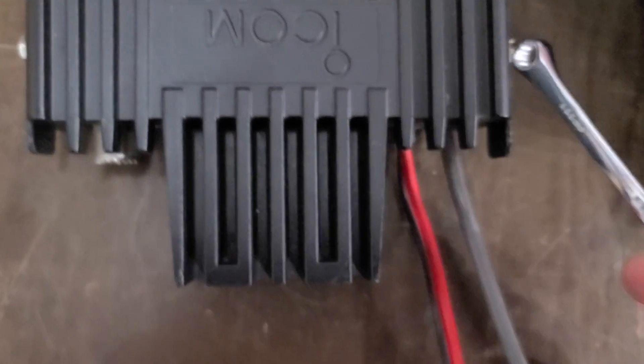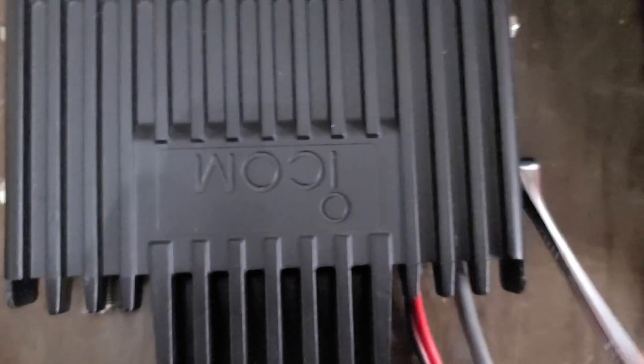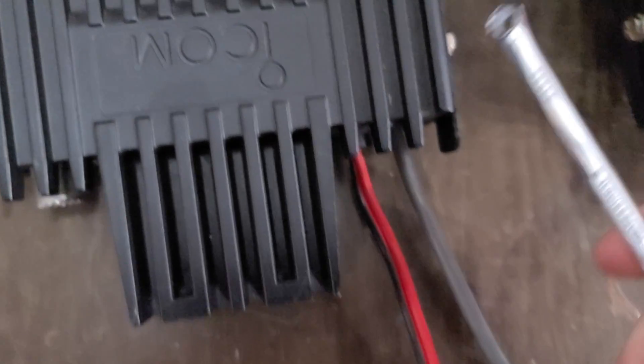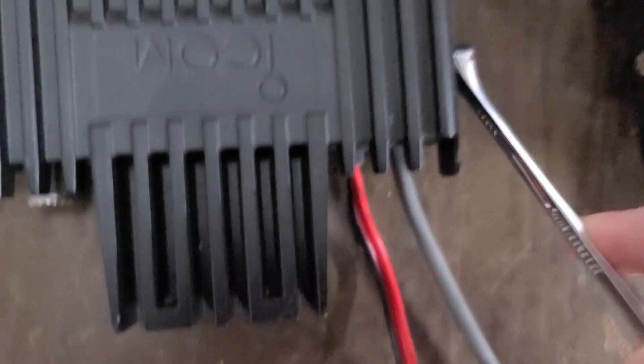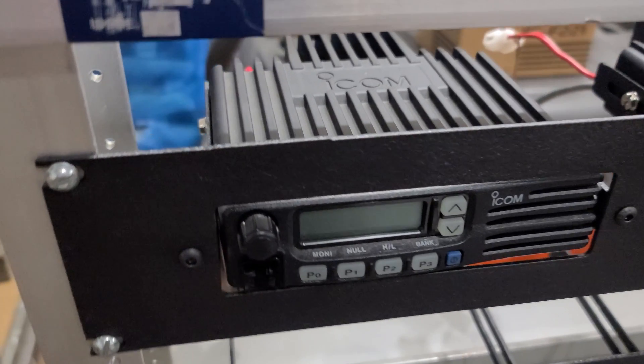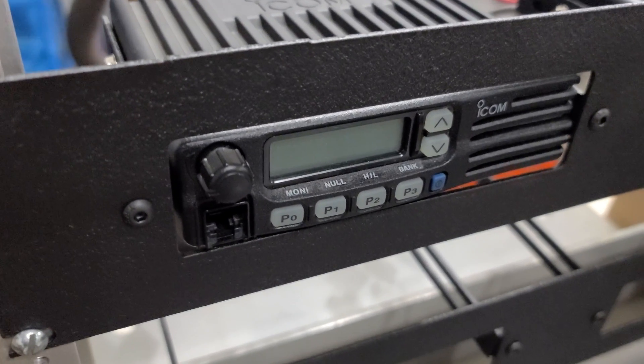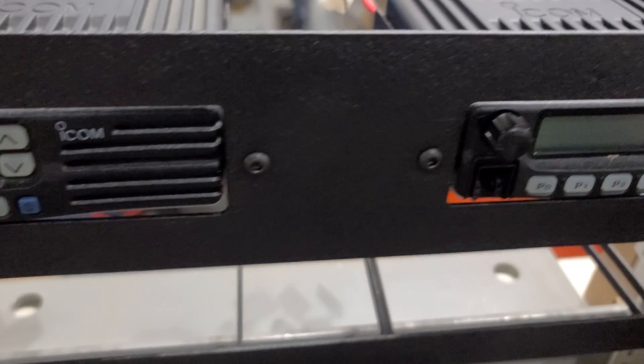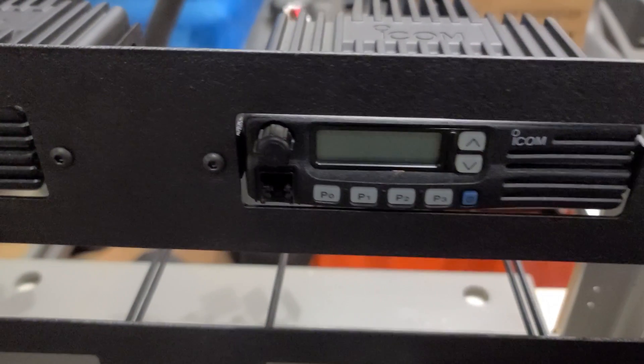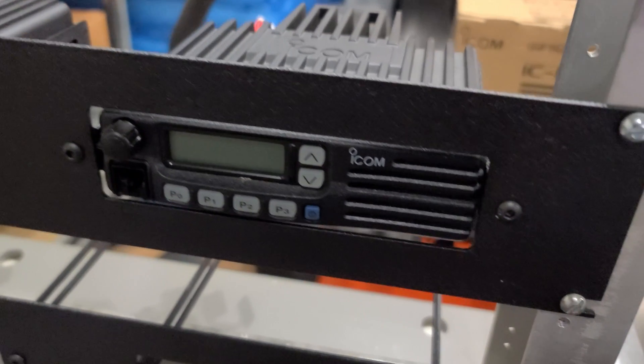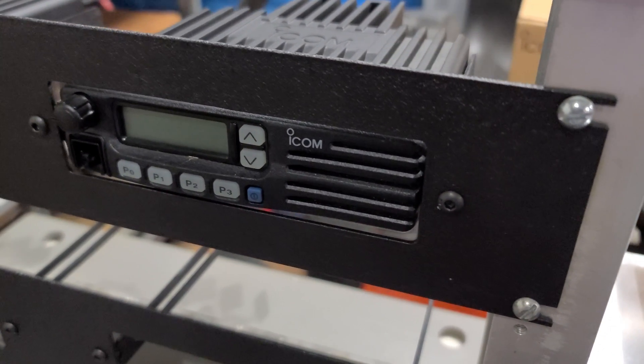Adjusting the depth was something we had to consider, because if the little knobs stick out too far, we can't actually put the door back on the cabinet. So we made sure that we adjusted these so those knobs aren't sticking out too far.